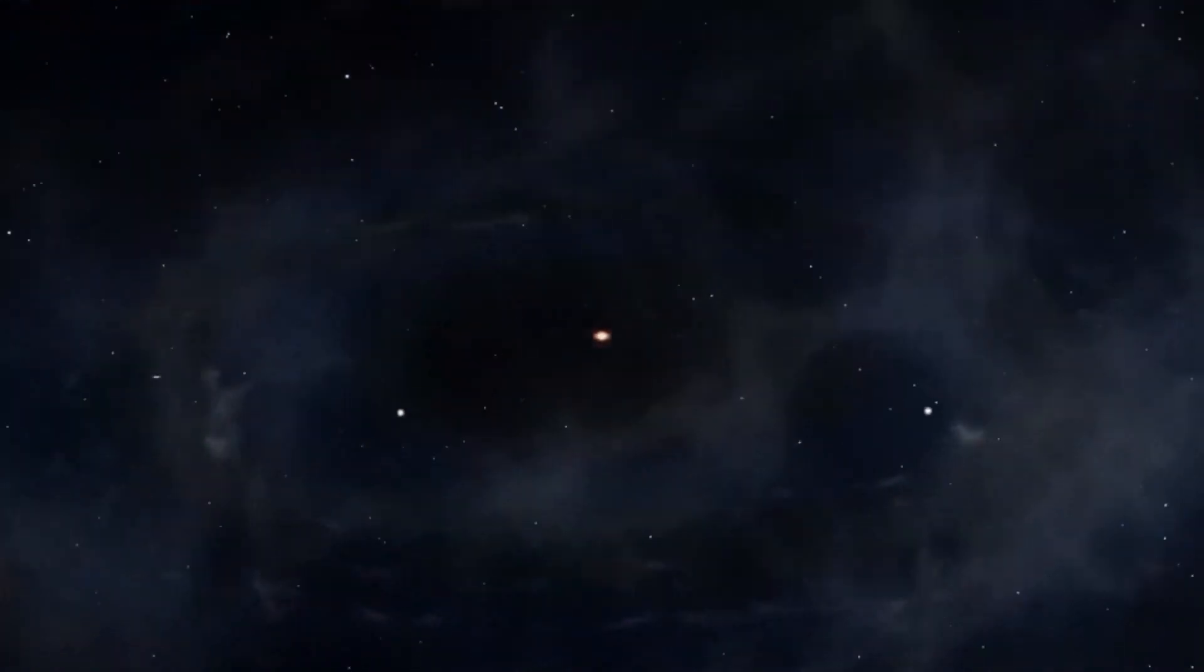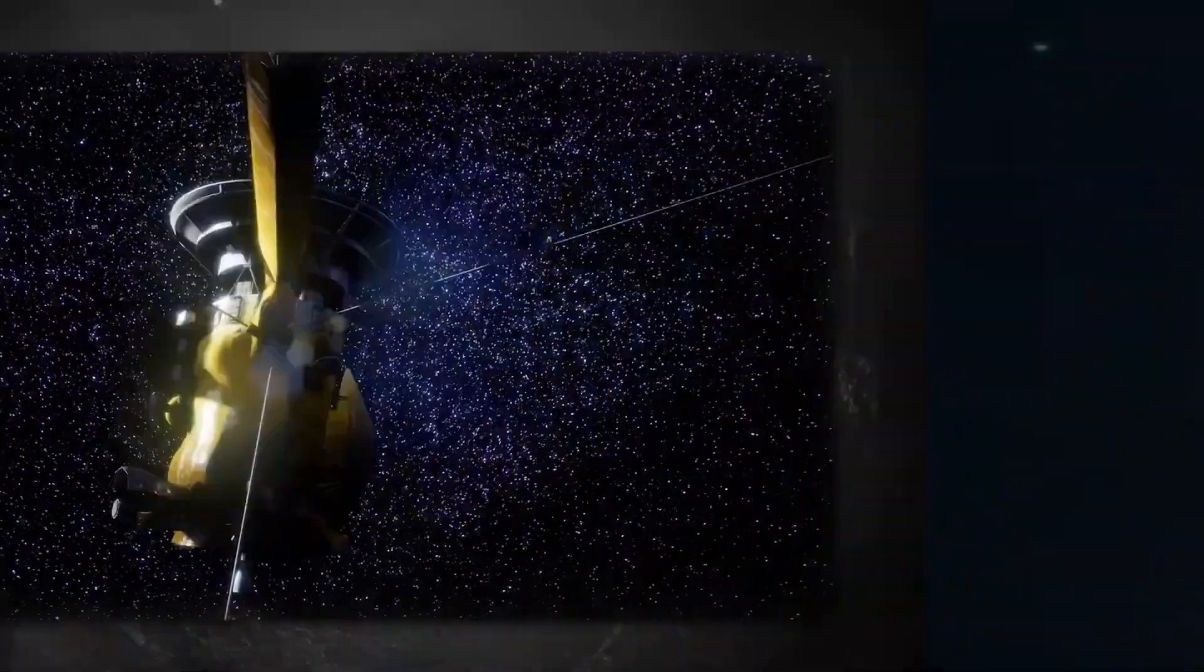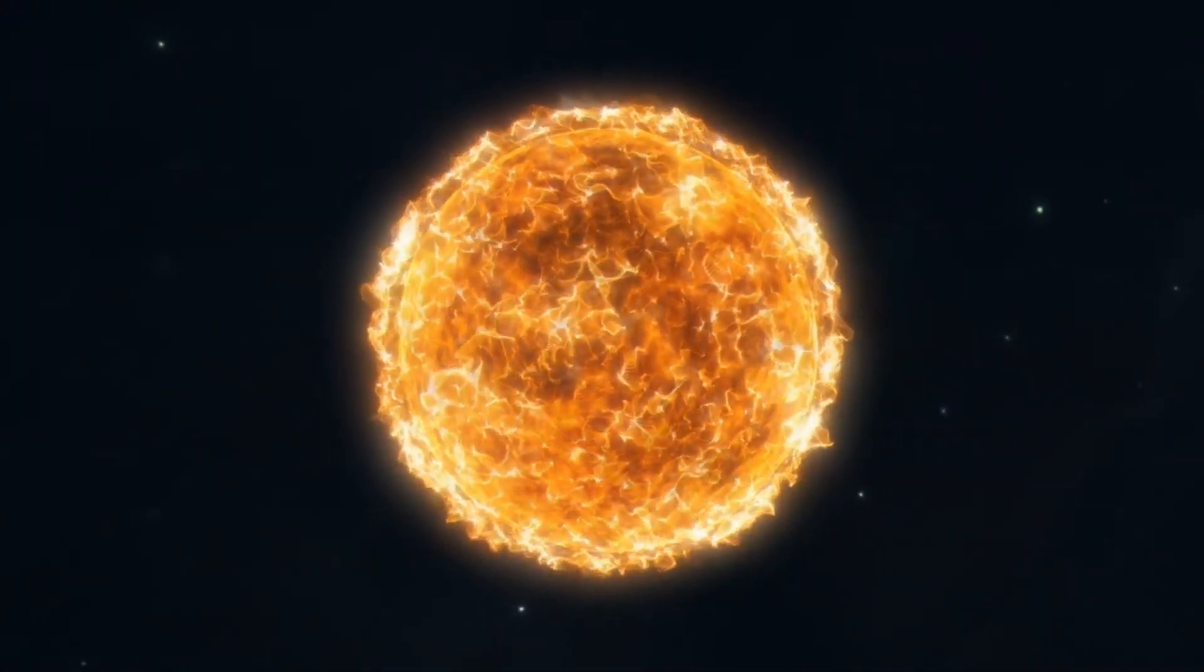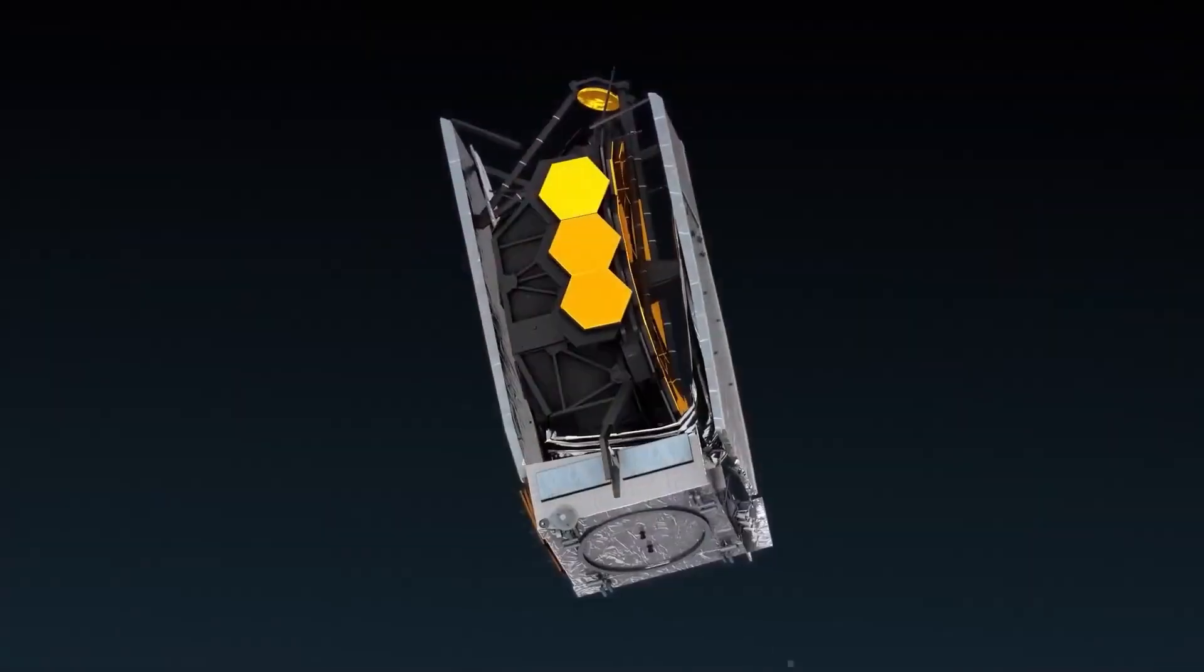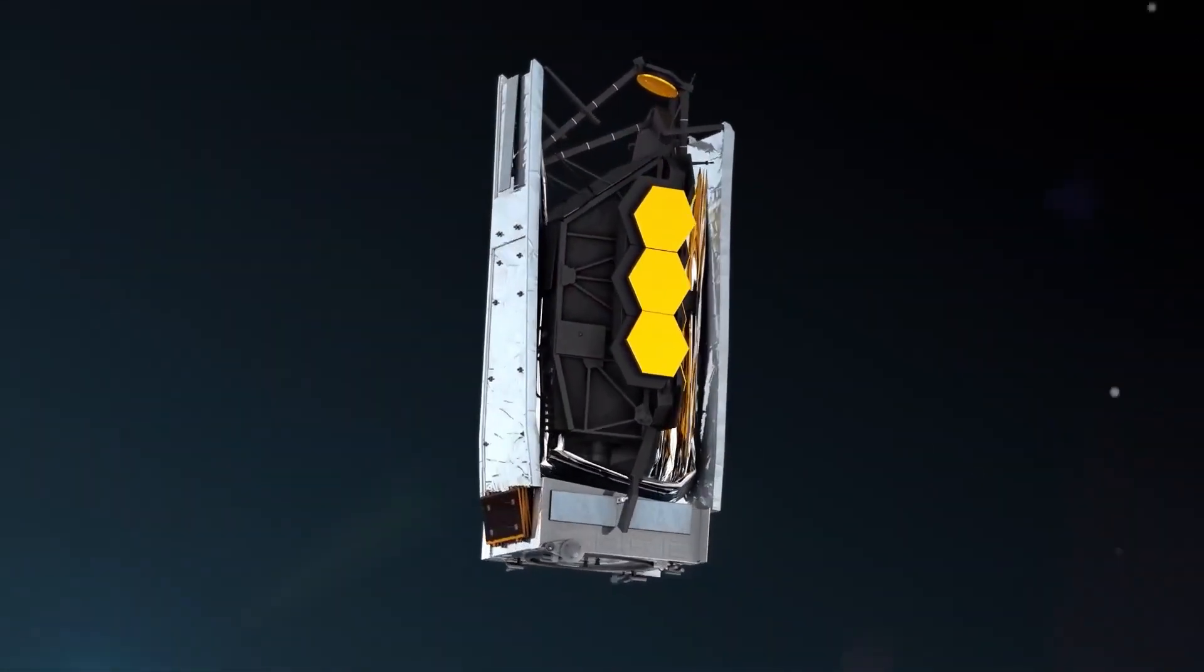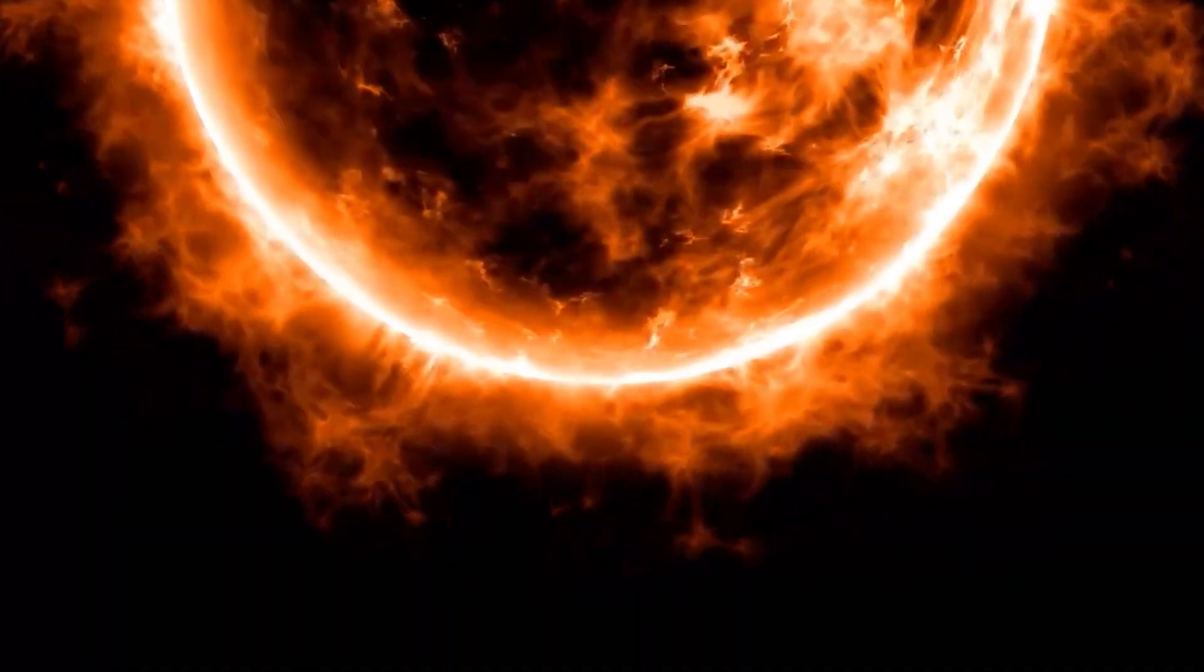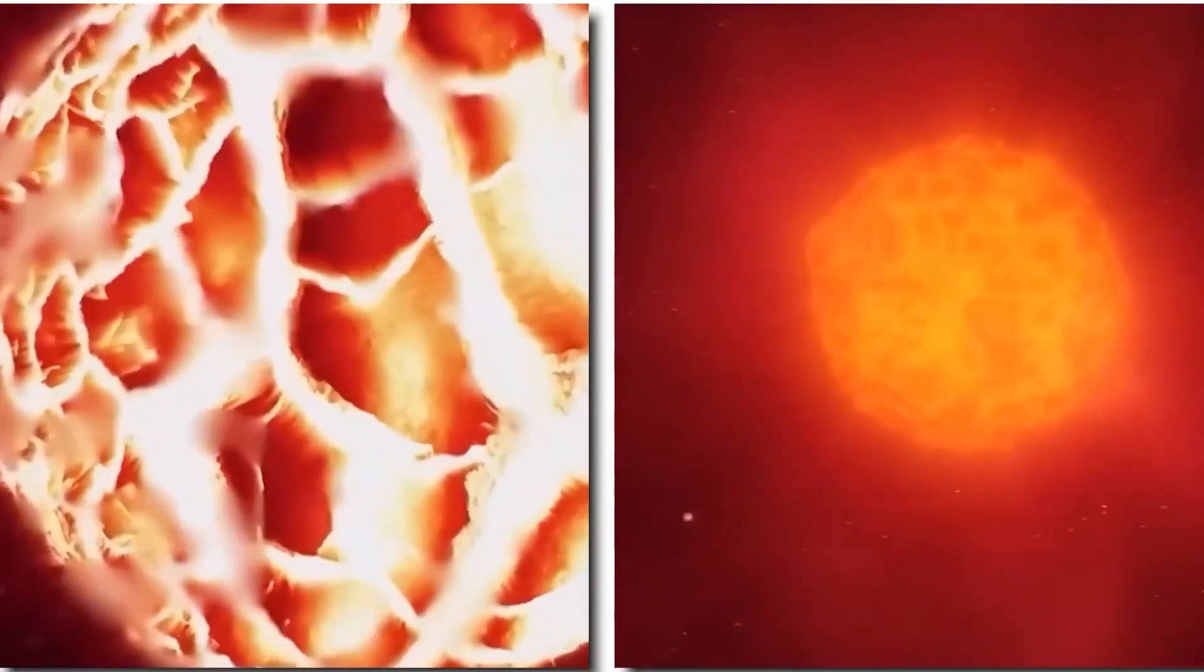Even though these red supergiants are alike, they are all different in their own ways. Antares is about 700 times bigger than the sun. Betelgeuse is more than 1,000 times bigger. And Mu Cephei is even bigger, with a diameter about 1,500 times that of the sun. Their different perceived magnitudes also make them look different at night.